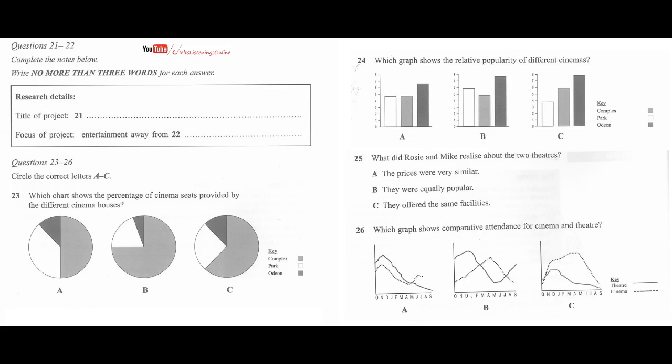Now listen to the first part of the discussion and answer questions 21 to 26. Good morning, everyone. Well, I think we can start straight away by getting Rosie and Mike to do their presentation. Would you like to start, Rosie? Yes. Well, we've done a survey on local entertainment. Basically, we tried to find out how students feel about the entertainment in the town and how much they use it. Yes. So, we've called our project Out and About. Yes, that's a good title. Out and About.